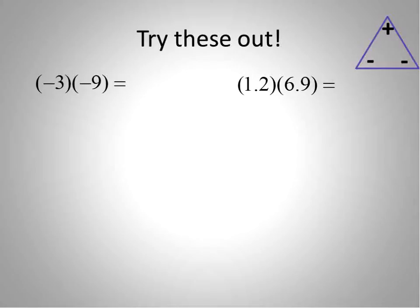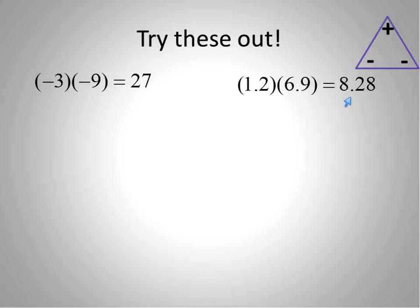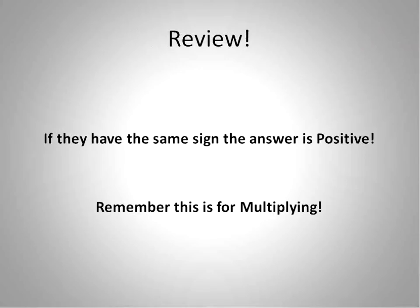Try some out. Go ahead and pause the recording and see what you get. Let's check out the answers — notice both answers are positive. We have positive 27 and positive 8.28. That's what we get when we multiply same sign: negative and negative, or positive and positive, always end up with a positive answer. Good job — give yourselves a round of applause. You're on your way to being a mathematician.